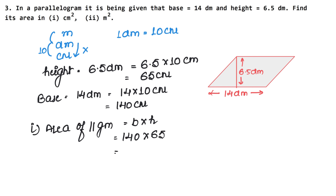The area of the parallelogram equals base × height = 140 cm × 65 cm. Working through: 0 as it is, 14 × 65 — 5 × 0 = 0, 5 × 14 = 70, 6 × 0 = 0, 6 × 14 = 84, 84 + 7 = 91. So the area is 9100 cm². That is the area of the parallelogram in cm².